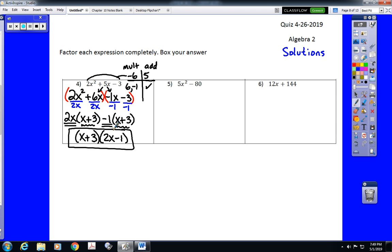On number five, we would start by removing the GCF, which is five. So, that would be five times x squared minus 16. Now, at this point, you should recognize x squared minus 16 as a difference of two perfect squares, meaning that it factors again, just like number three did, into x plus four and x minus four.